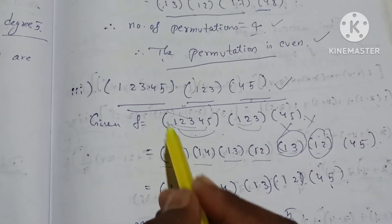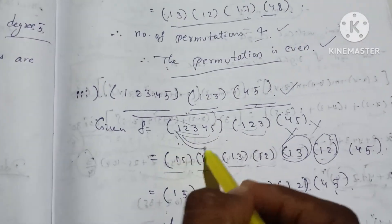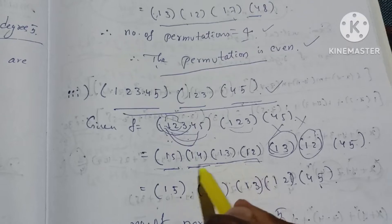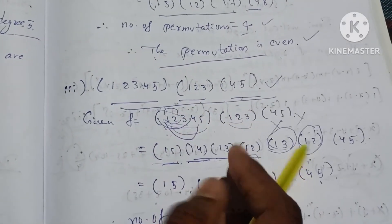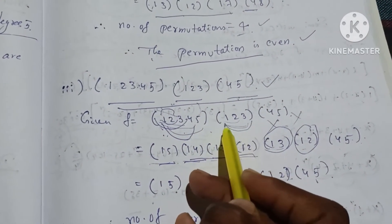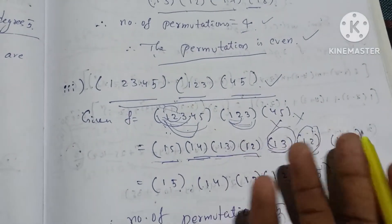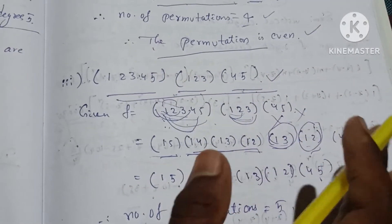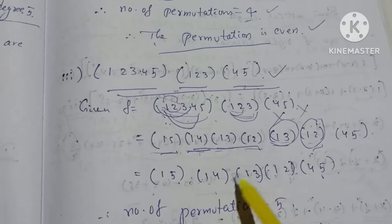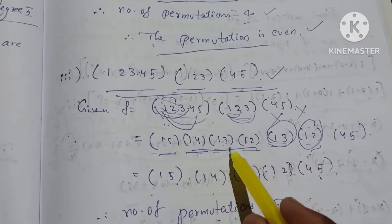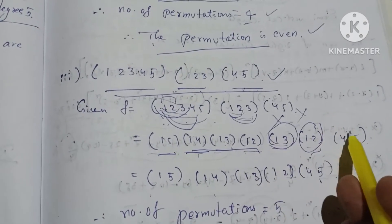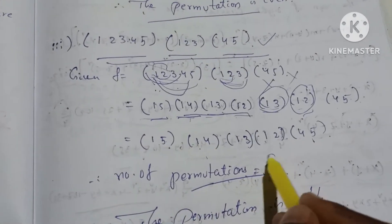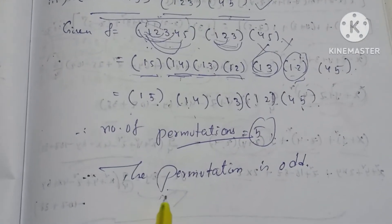First cycle: (1,3), (1,5), (1,4), (1,3), (1,2). So E-cycle, transpositions. Now E-cycle: (1,3), (1,2). (1,3), (1,2), (4,5). You can write the same thing: back to first element — (1,5), (1,4), (1,3), (1,2). Repeated: (1,2) repeated. (4,5). So what is it? (1,2,3,4,5). Number of transpositions is equal to 5. 5 is the odd number. Therefore the permutation is odd.